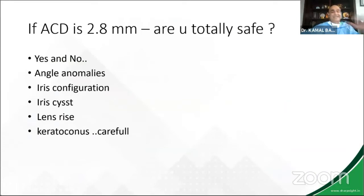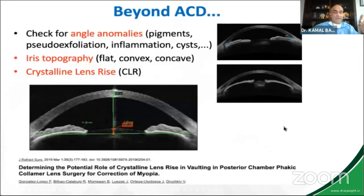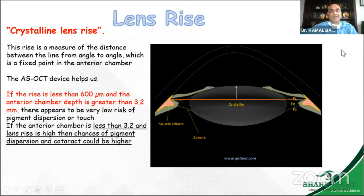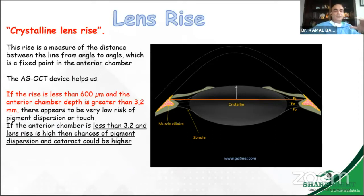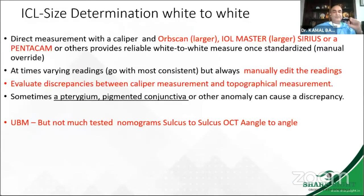If your anterior chamber depth is 2.8 mm, are you safe? I would say yes and no — look for angle anomalies, iris configurations, lens rise, and keratoconus, because you can land up in a difficult situation. Lens rise: if you draw a straight line on your OCT diagram from one angle to the other, the number of microns the lens rises above this line is your lens rise. Anything more than 600 microns, be careful — plan your vault slightly higher, going for a size 0.25 mm larger than the white-to-white measurement would indicate.